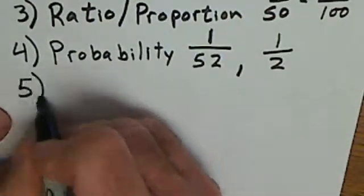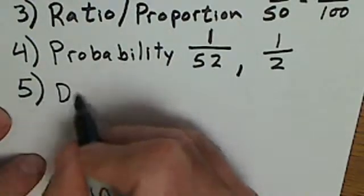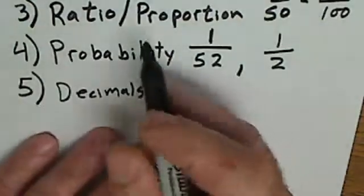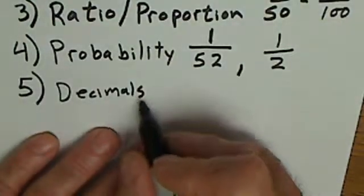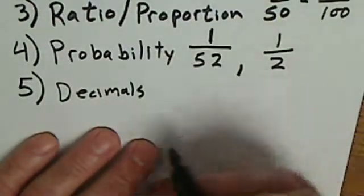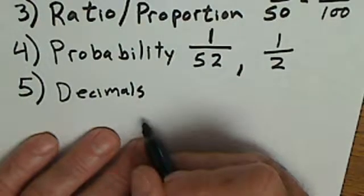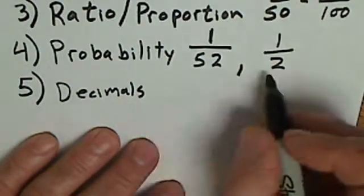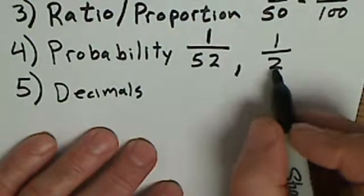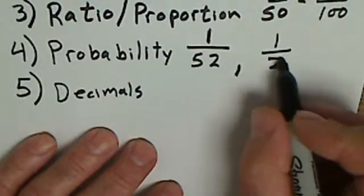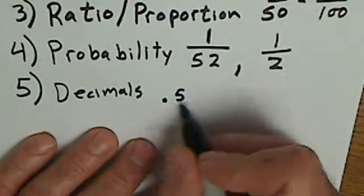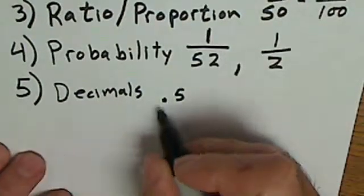Number five on the list is decimals. Decimals are the same thing as fractions or probability or ratio. A decimal is a fraction where the denominator, the bottom number, is in the tens or hundreds power. So if the probability of a king of hearts is one out of two, the decimal of that is .5, .5 of one.